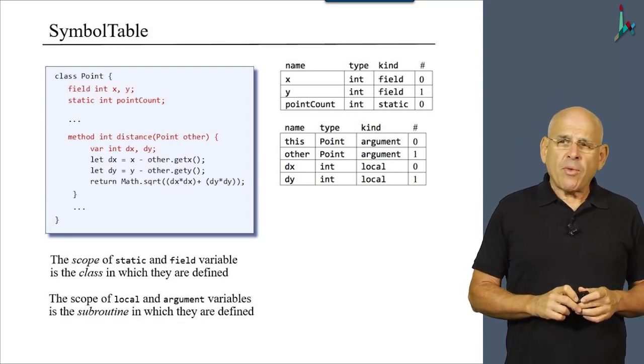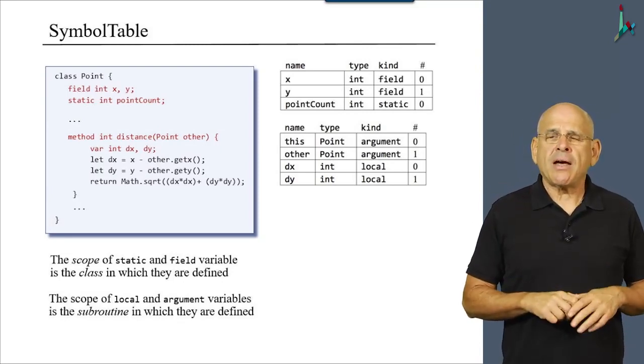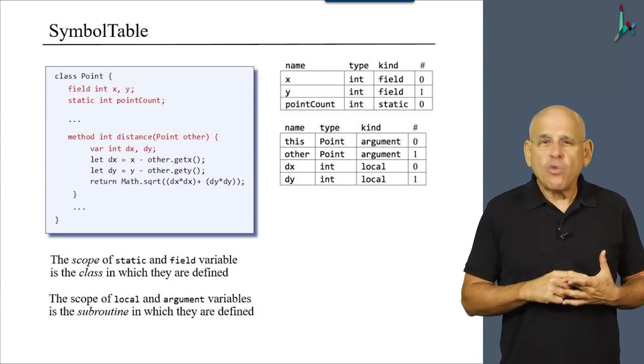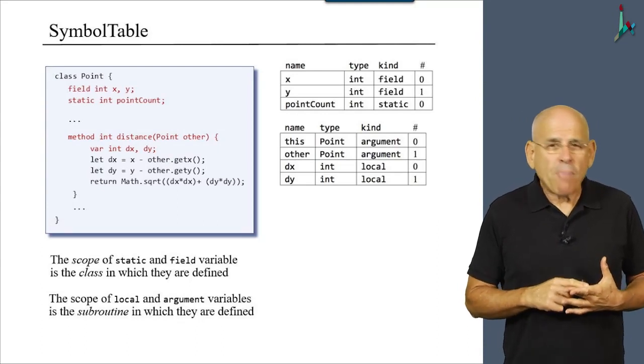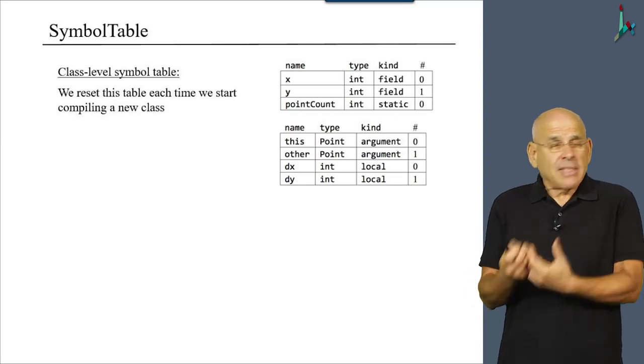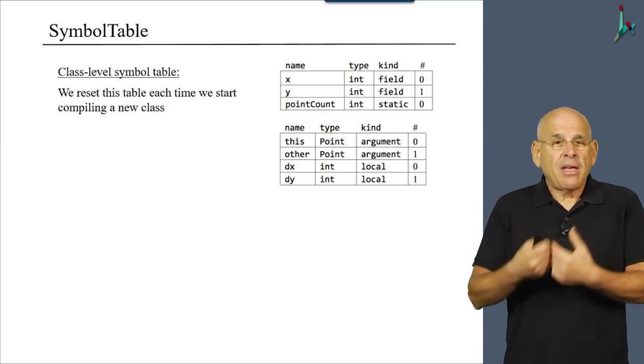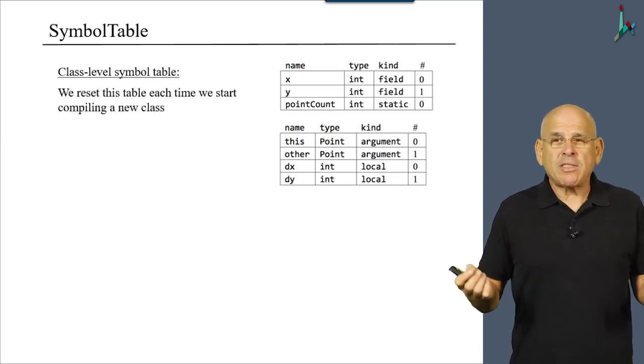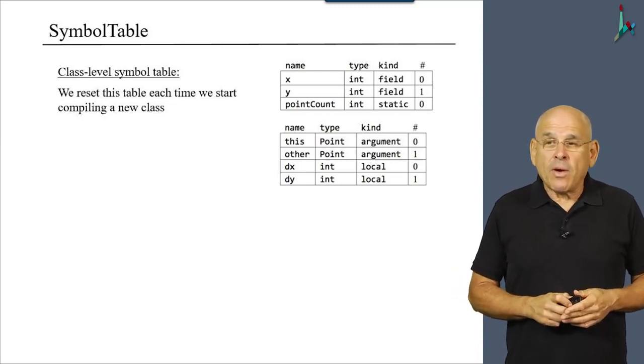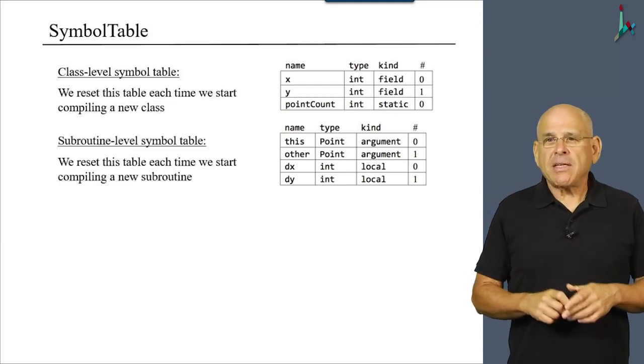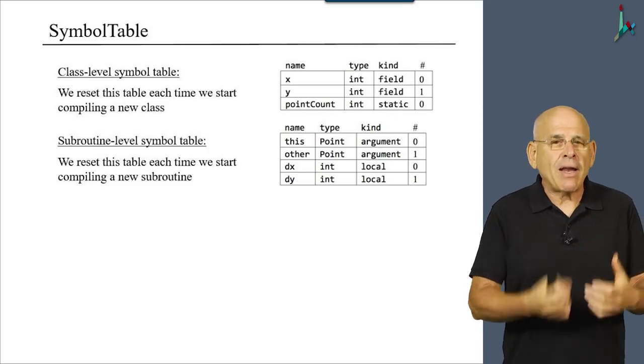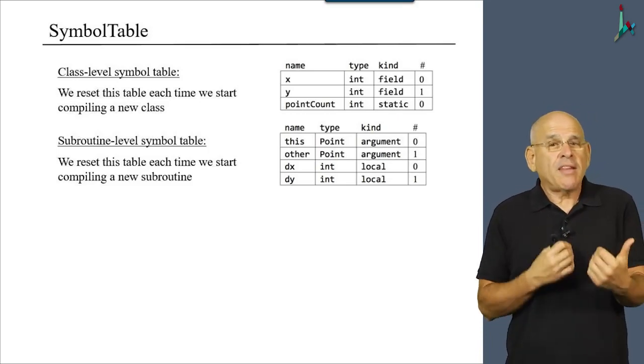Now, one thing that we can conclude from this exposition here is that we never need more than two symbol tables. The compiler never needs more than two symbol tables. Why? Because the class level symbol table can be initialized each time we start compiling a new class, obviously. And what is maybe less obvious, the subroutine level symbol table can also be reset each time we start compiling a new subroutine within the current class.